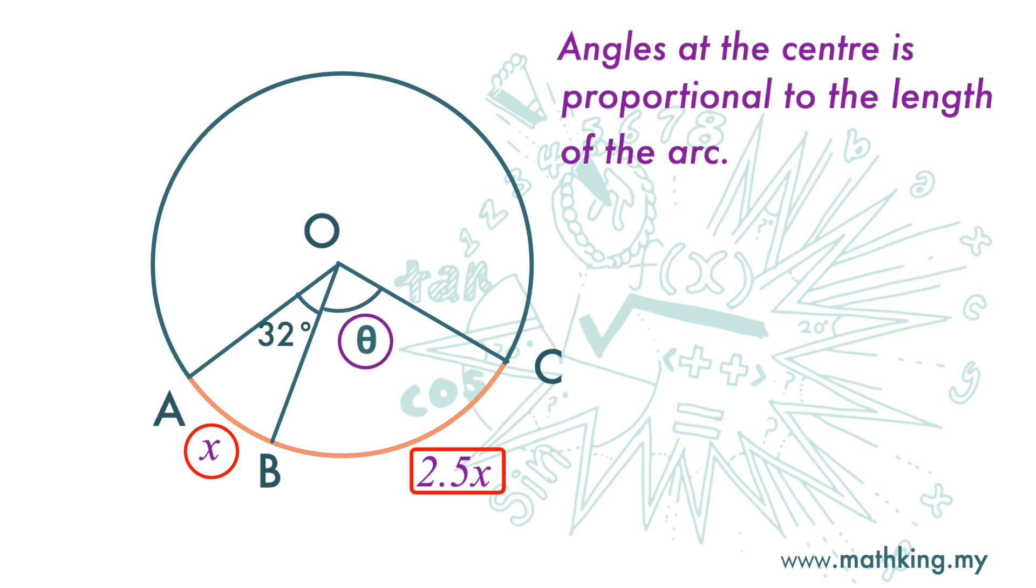Then angle theta is 2.5 times this angle of 32 degrees. So angle theta is 32 degrees times 2.5, which equals 80 degrees.